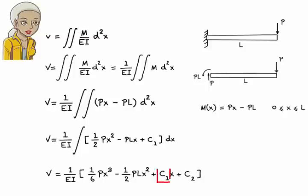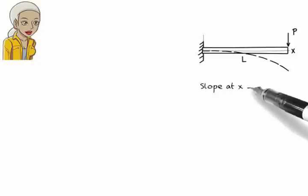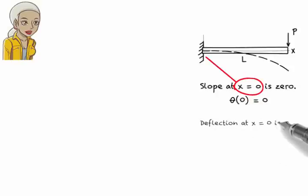Here, c1 and c2 are integration constants. They can be determined using the boundary conditions. Since there are two constants, we need two boundary conditions. They are, slope of the elastic curve at x equals 0 is 0. Deflection at x equals 0 is 0.